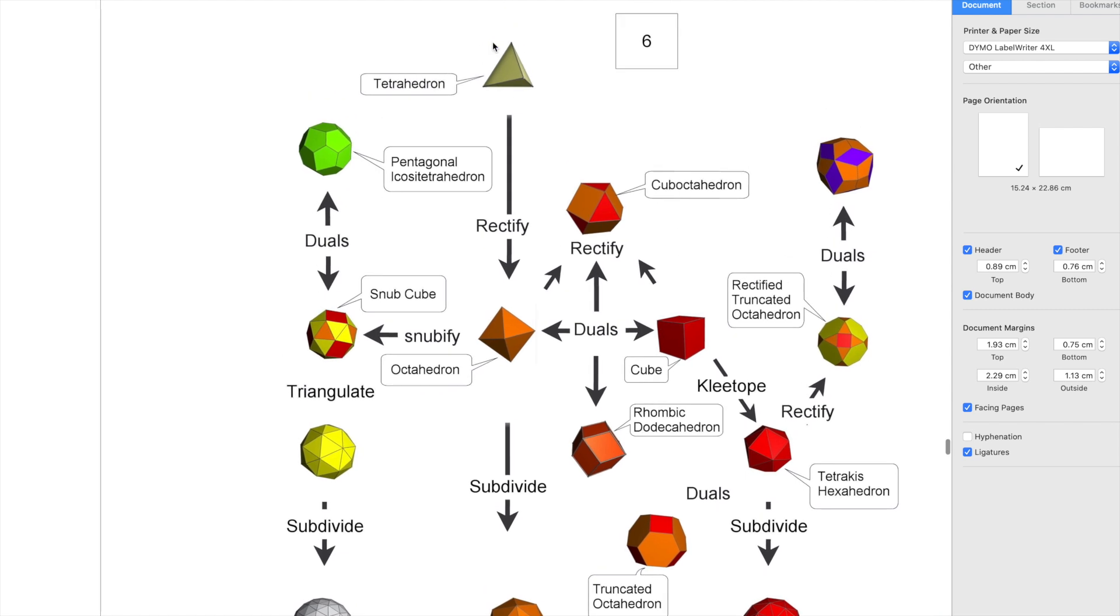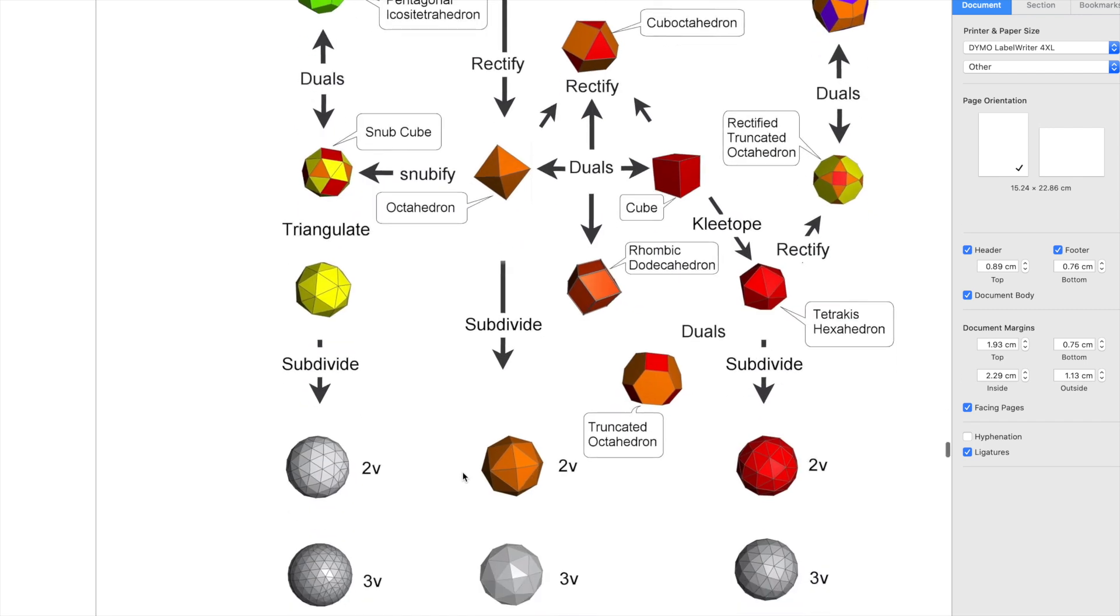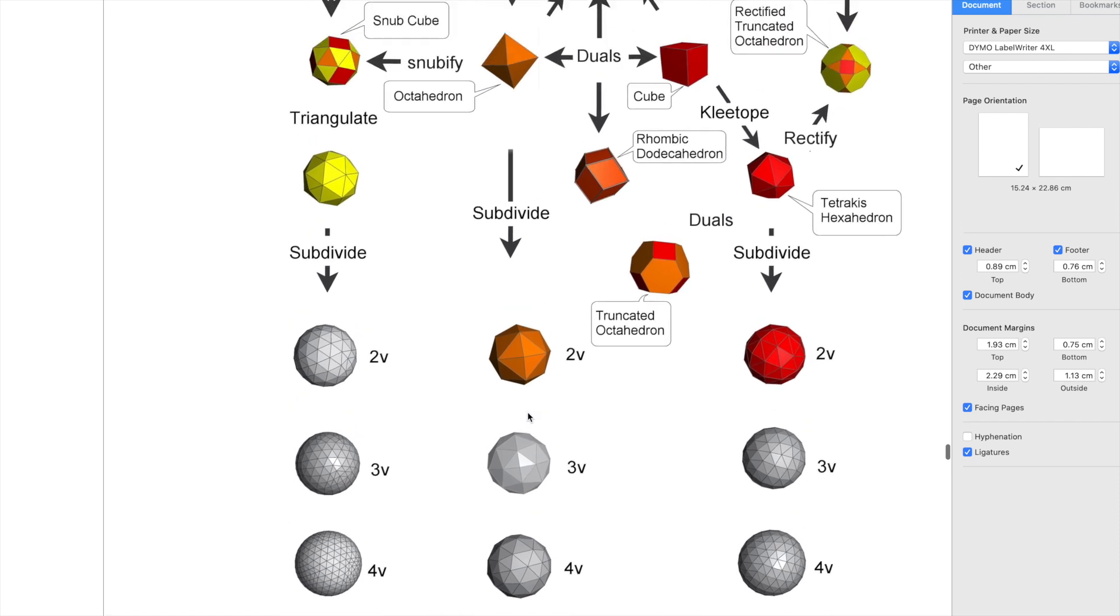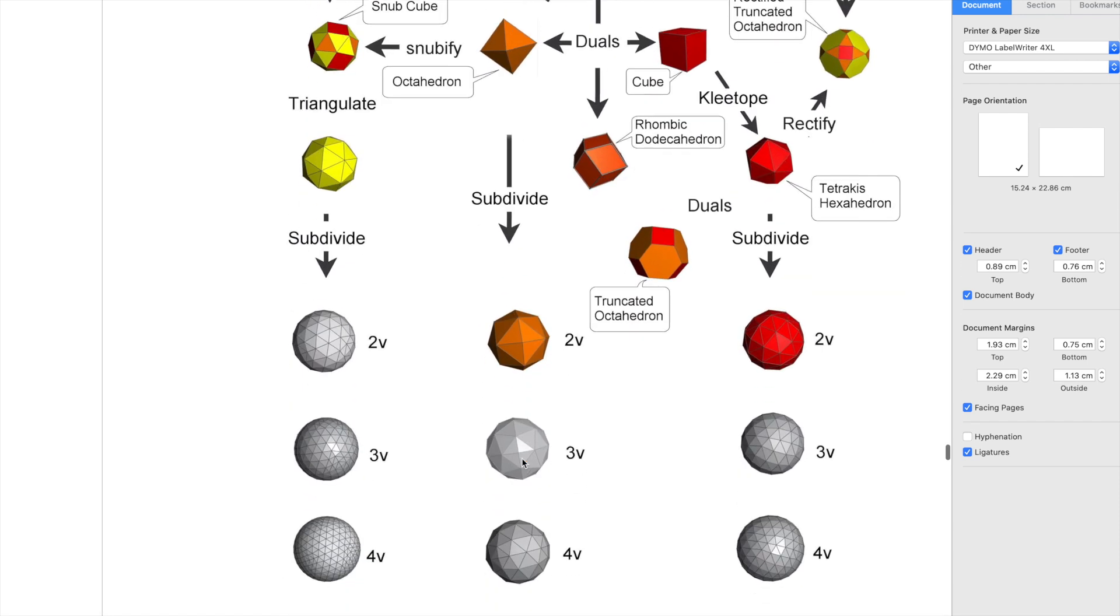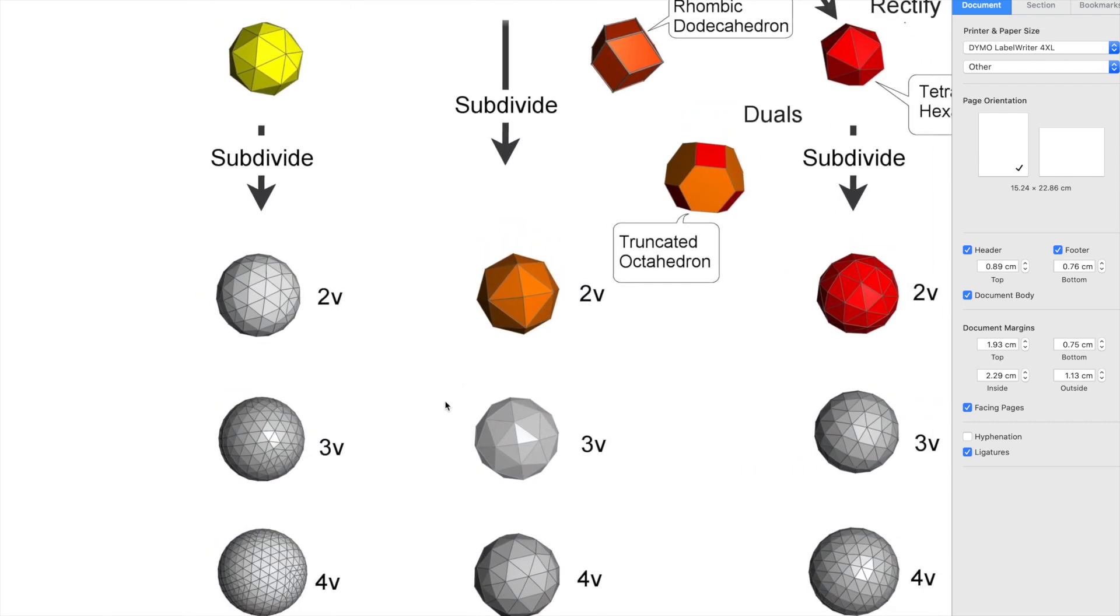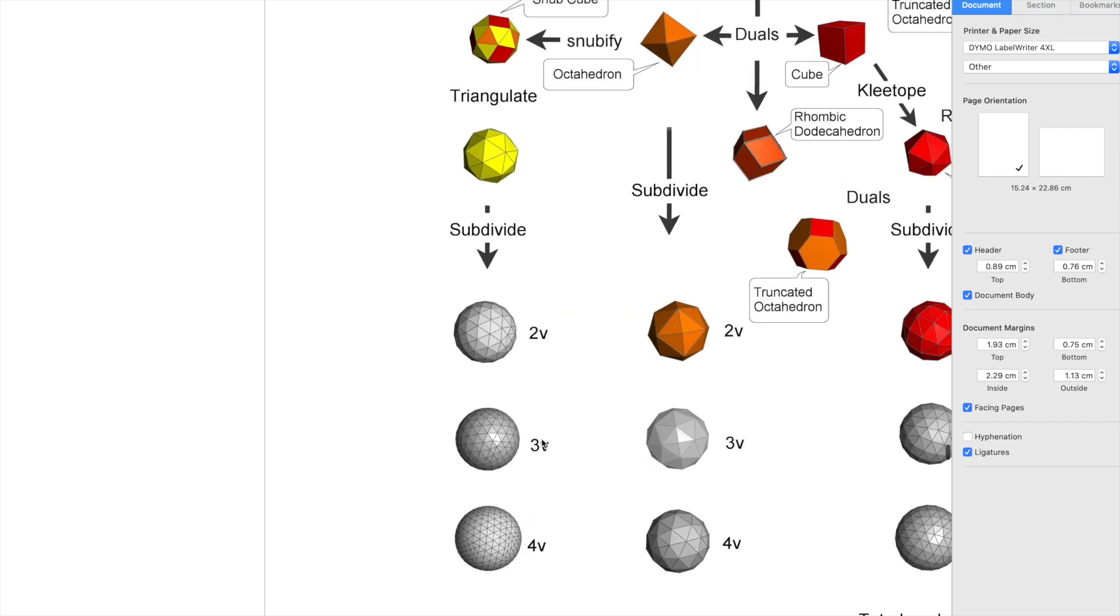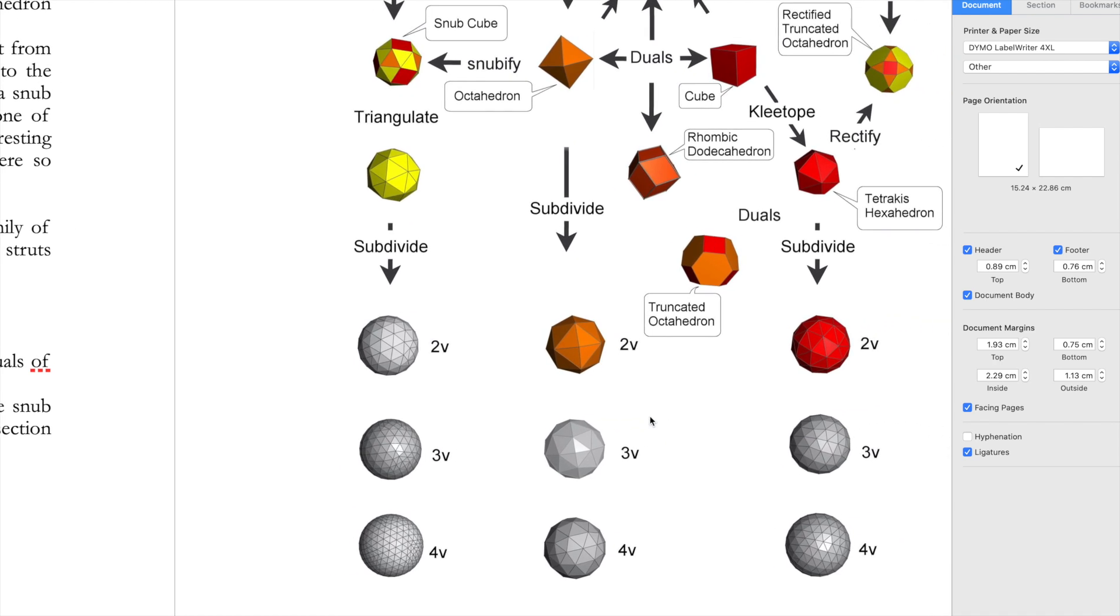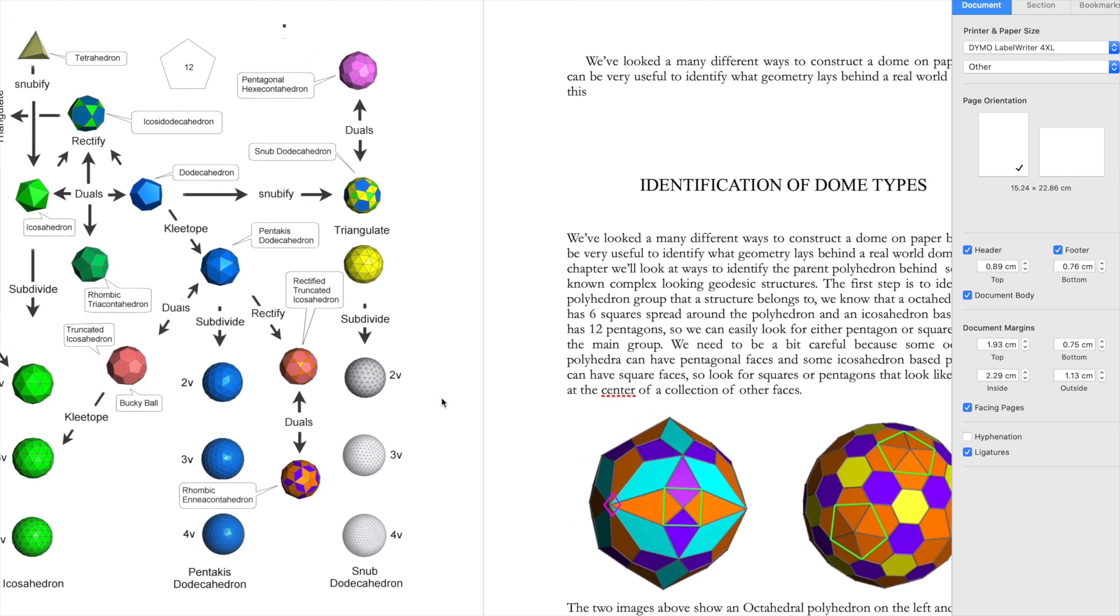This is how they originate from a tetrahedron because all polyhedrons can be generated from a tetrahedron. So you're looking at duals, rectified, snubify - in the book it shows you what these are and how to get them. Let's look at this one, this is the octahedron, two frequency, three frequency. If you have a quick look though, you'll see that there's a square on this and that's how you know that this is an octahedron base because they'll have square faces somewhere on them, it's triangulated but it adds up to a square.